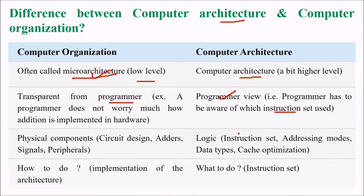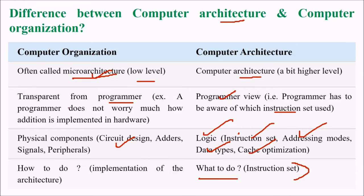Computer organization deals with physical components: circuit design, adder, signals, and peripherals. While computer architecture deals with logic such as instruction set, addressing mode, data types, and cache organization. Computer architecture says what to do — that is, the instruction set — while computer organization says how to do the actual implementation of the architecture.